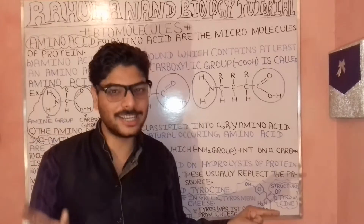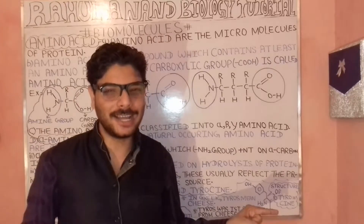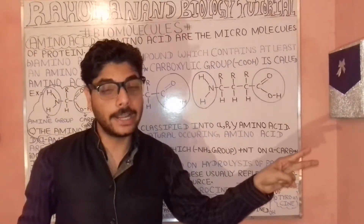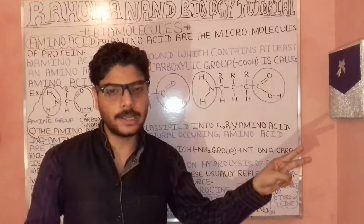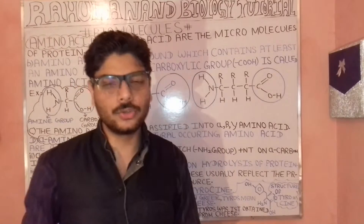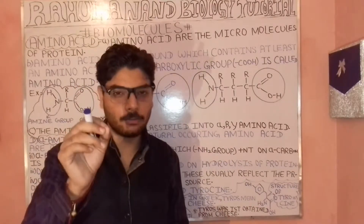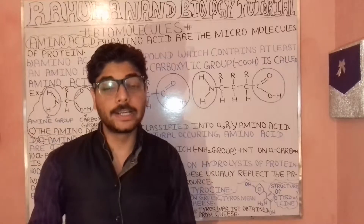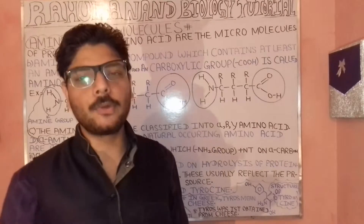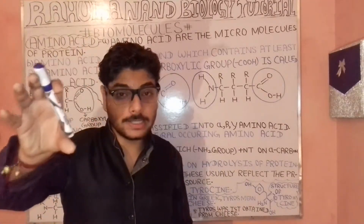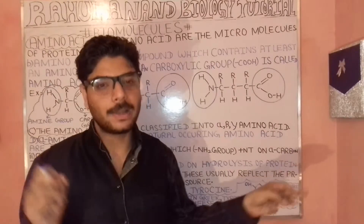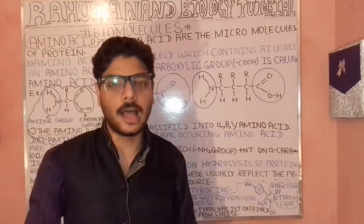On the other side, in the third phase, we have C double bond O, then H — meaning carbon is attached to oxygen by a double bond, and at the bottom carbon is attached to hydrogen by a single bond. So amino acids are divided into three broad categories: alpha amino acid, beta amino acid, and gamma amino acid.